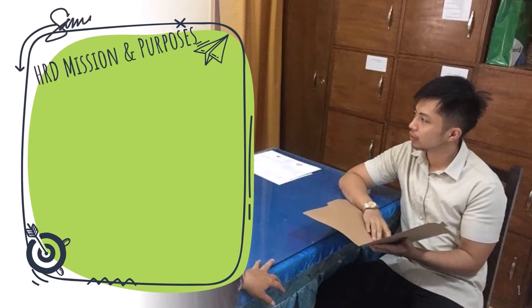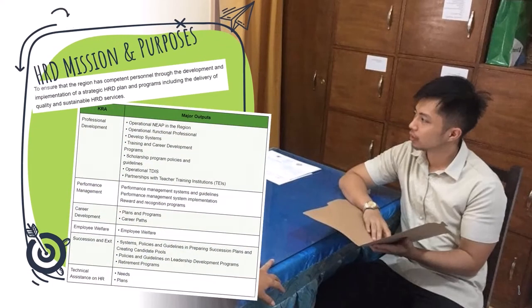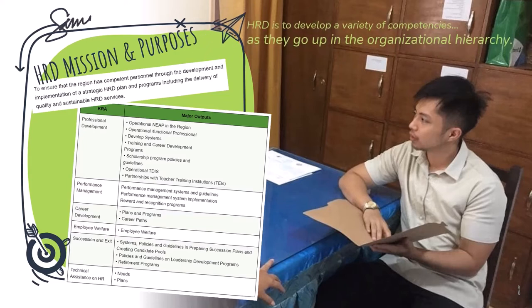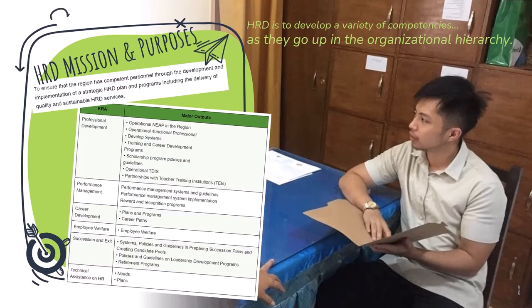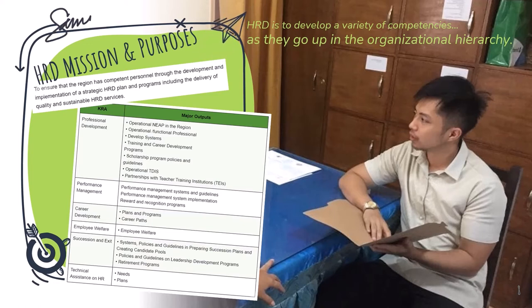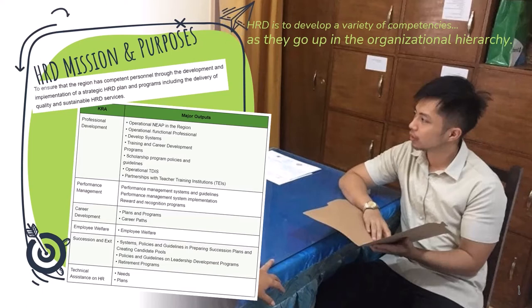After reviewing different organizations' HRD missions, generally the mission is to develop a variety of competencies — referring to knowledge, attitudes, skills, technical areas, managerial areas, behavioral, conceptual, and human relation areas — that will help employees perform several tasks or functions expected or required by the job. The mission also includes the idea that employees, as they perform their jobs, could progress and go up in the organizational hierarchy.